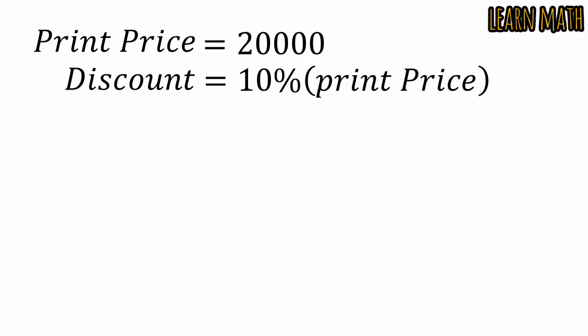The print price is equal to 20,000 rupees. The discount is equal to 10% of the print price. That is equal to 10 divided by 100 multiplied by 20,000. Cancel the two zeros with these two zeros and multiply 10 into 200, you will get 2,000.